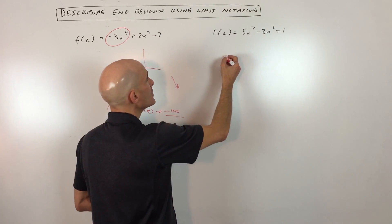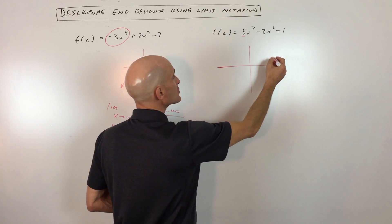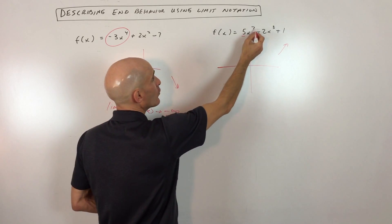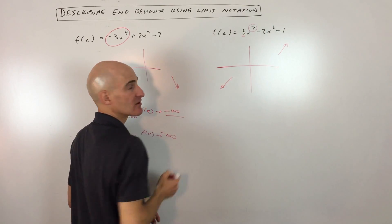So in this one, we can see that the leading coefficient's positive. So as we go to the right, this is going to go up to positive infinity. We have an odd degree. So as we go to the left, it's going to go the opposite direction, like so.